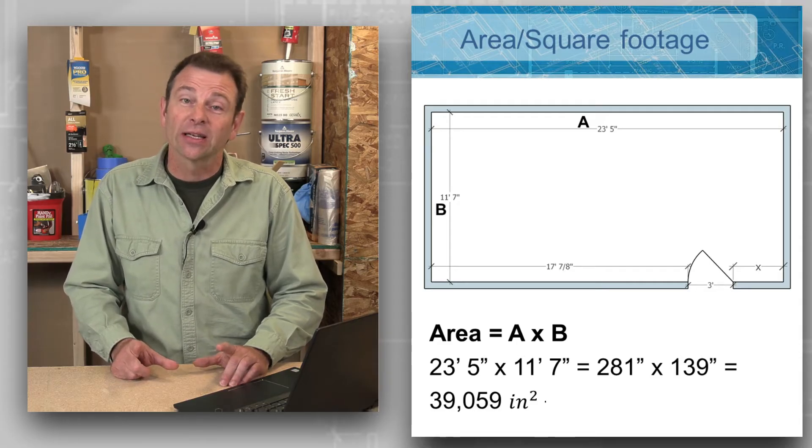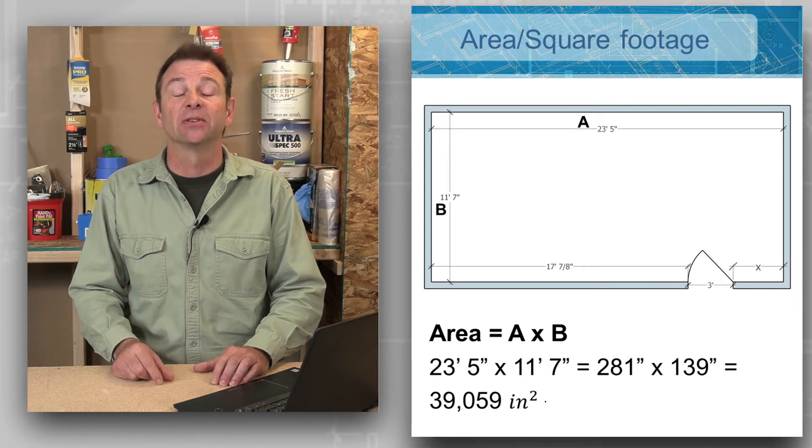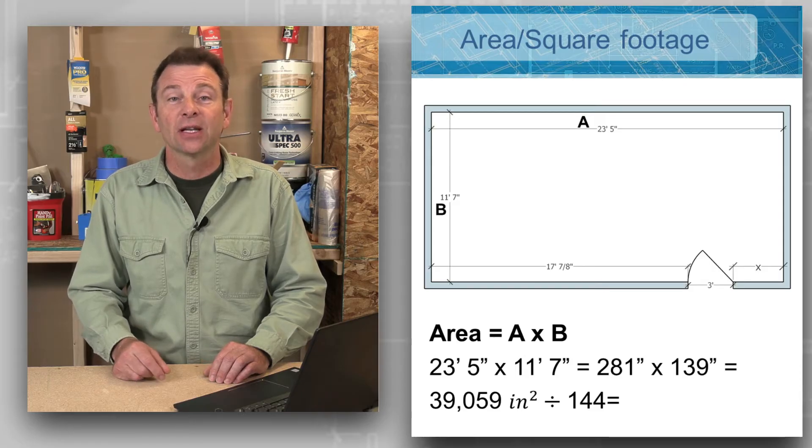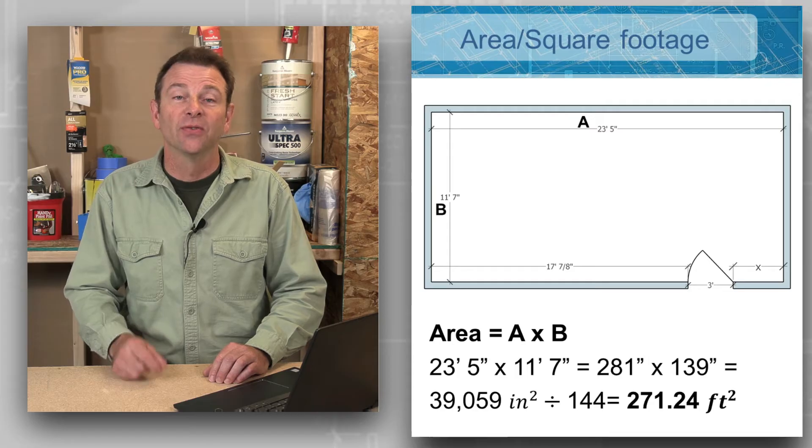Now that we have that, we can convert this square inch measurement into a square foot measurement by dividing it by 144. This is going to give us a total square footage of 271.24 square feet.